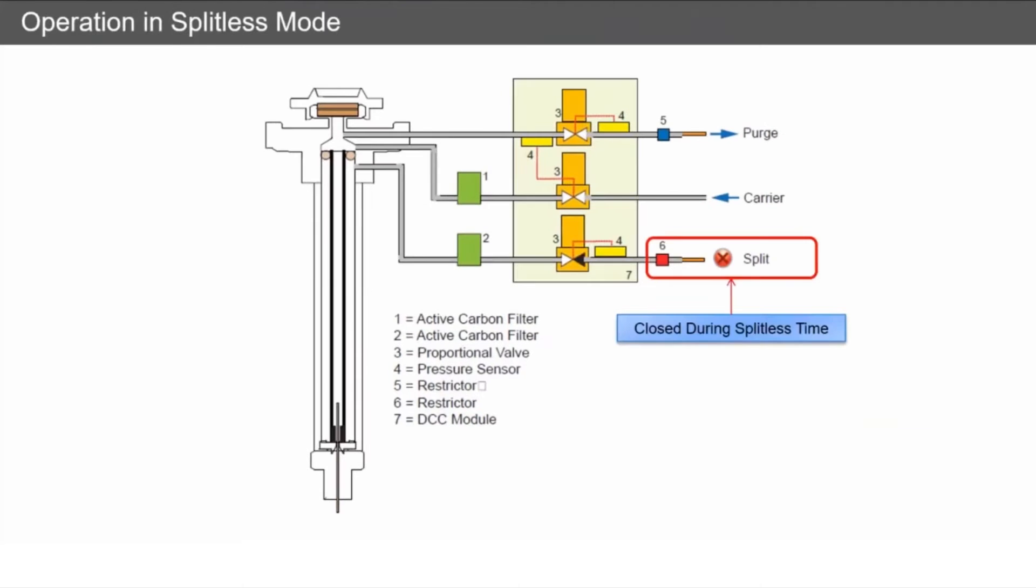In splitless mode, we want everything that we inject to go onto our column. While the injection happens, we've got a flow coming in for our carrier and a small flow coming out the purge. But as the injection takes place the split valve is closed, which means that everything from the carrier and your injection is passing onto your separation column.